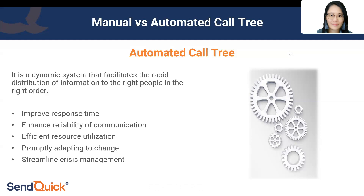There are several benefits to automation. First, it increases response speed. Instead of someone manually looking through a phone book and dialing numbers, a click of a button activates the call tree instantly. This reduces the time to activate and gets faster responses from recipients — critical in situations where every second counts.